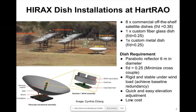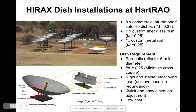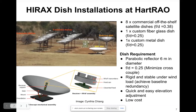This is an artistic impression of the final dish. We have the foundation, the mount that supports the dish, and a receiver support — a fiberglass column running through the center of the dish. It provides a natural environmental enclosure for the front-end electronics.